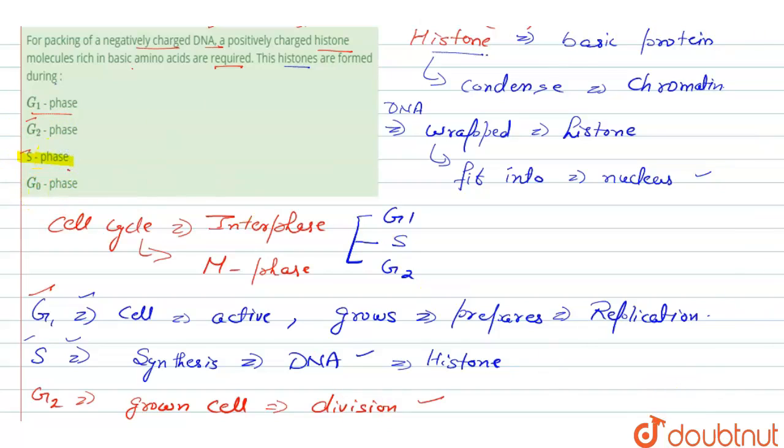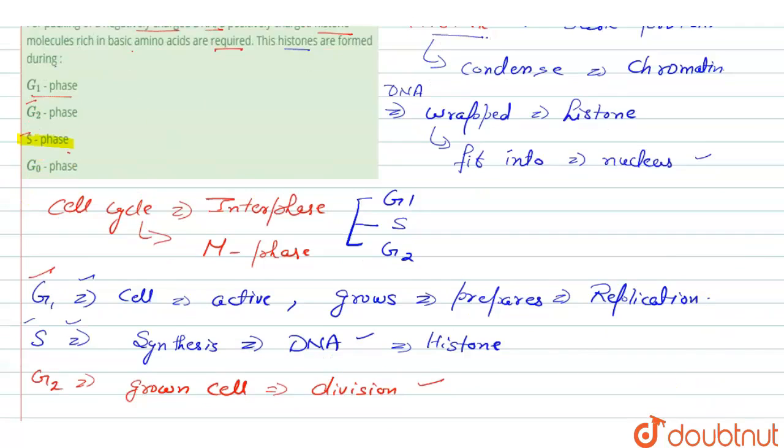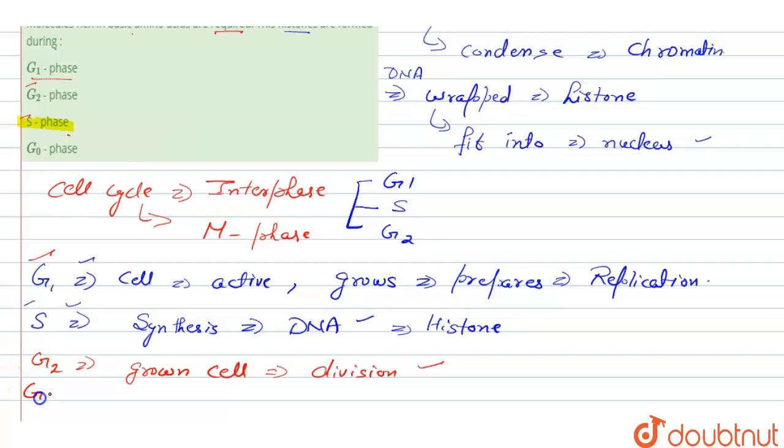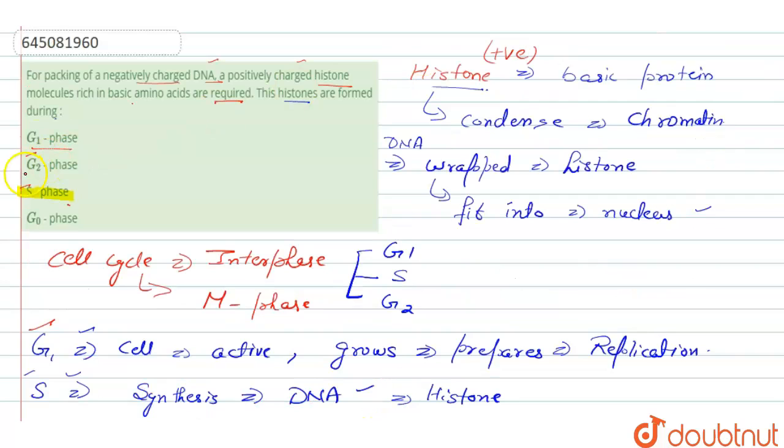Talking about G0 phase, what is G0 phase? It is the resting phase in the period of the cell cycle. So the right answer for our question is option number three only.